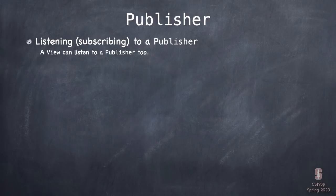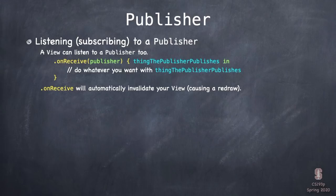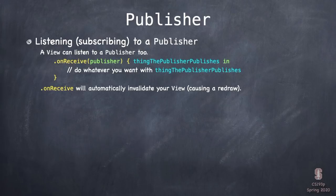Another way for a view to listen to a publisher is the .onReceive ViewModifier. You give it the publisher and a closure, and the argument to the closure is the thing the publisher emits. This closure will be called every time that publisher publishes, and your view will get invalidated and redraw. It's a fantastic way to hook your view up to some source of data so every time data gets published, your view does something.